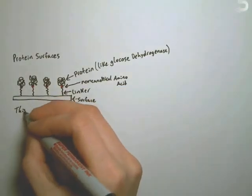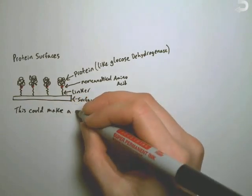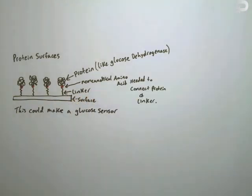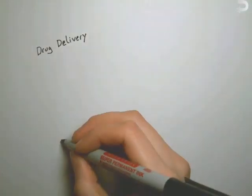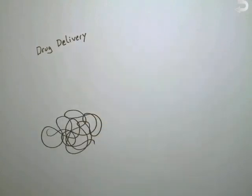You are probably wondering, what is the point of making proteins with weird unnatural amino acids? Non-canonical amino acids can be used as tools to help scientists solve problems in a variety of fields. Protein surfaces, drug delivery, cell imaging, you name it.